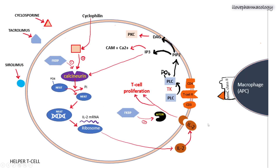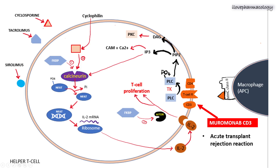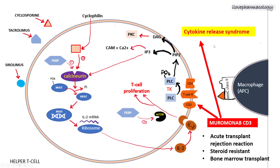Muromonab-CD3 is another important biological agent. It inhibits the activation of the CD3 receptor located on the surface of helper T-cells. It is used during acute transplant rejection reactions in steroid-resistant cases and during bone marrow transplantation. The major concern with muromonab-CD3 is that it causes cytokine release syndrome.